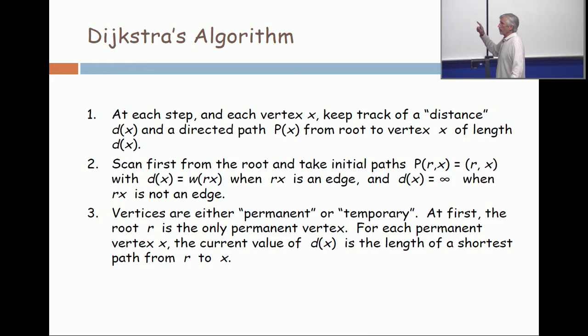For each vertex, you have a path which consists of going from r to x, but the question is whether that's a real edge or not. If it's not a real edge and you can't travel on it, you say you could travel on it, but you have to pay infinite number of dollars to do so, which mathematically means you won't travel on it.